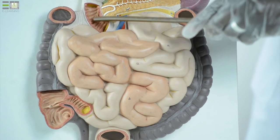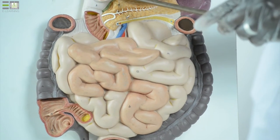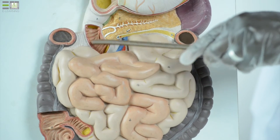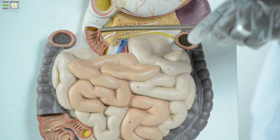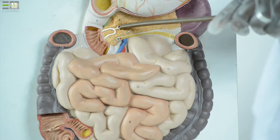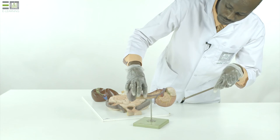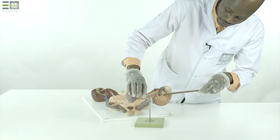The duodenum is subdivided into four parts: the first part, the second, the third, and the fourth. The second receives the main pancreatic duct, and also receives the bile duct posteriorly.